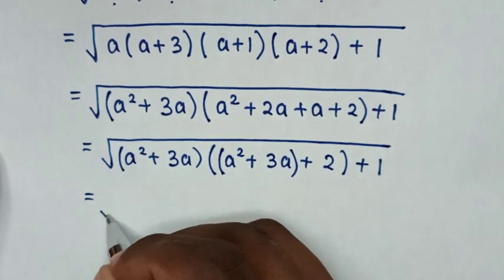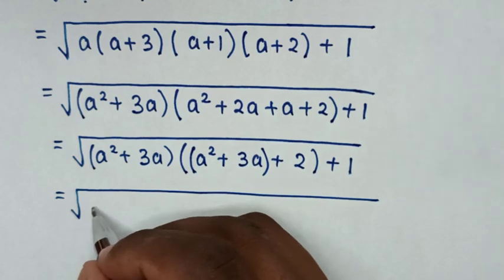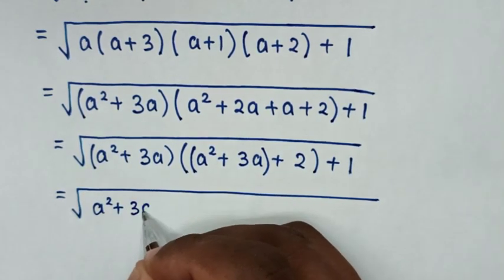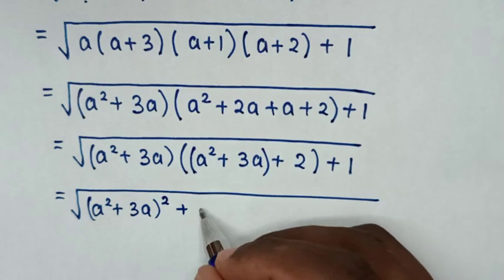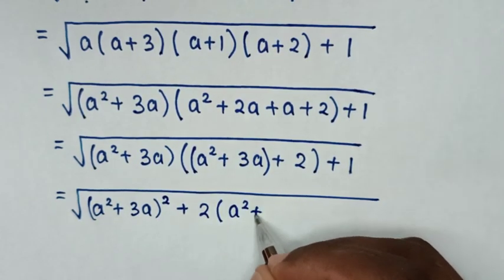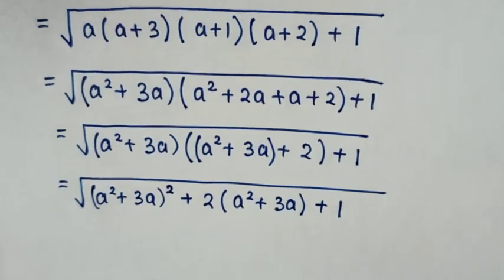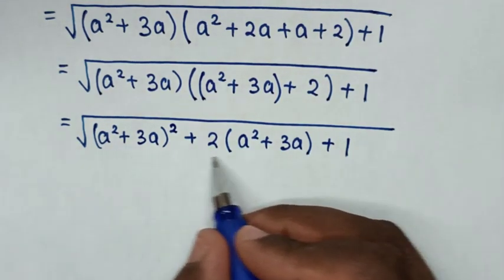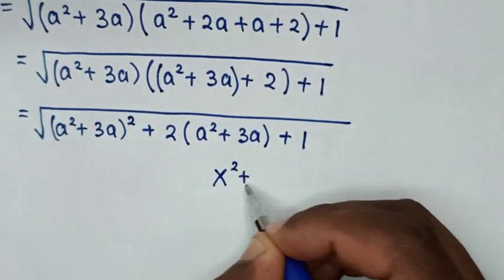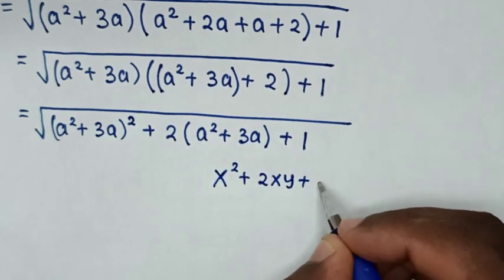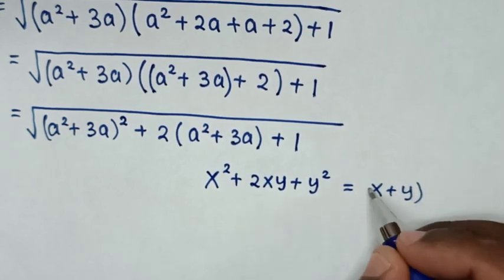It will be equal to square root of (a squared plus 3a)(a squared plus 3a plus 2) plus 1. The expression under the square root is in the form of a quadratic: x squared plus 2xy plus y squared, which equals (x plus y) squared.